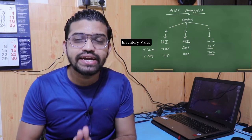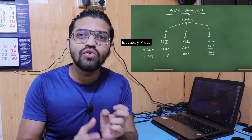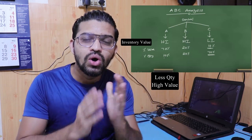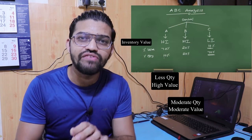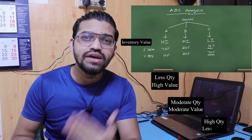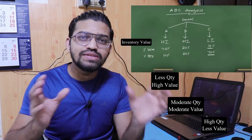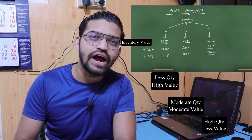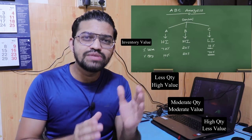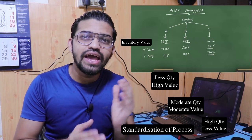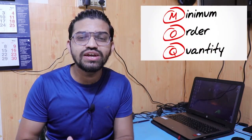All inventory items are categorized in terms of value and quantity. Class A: lesser quantity, higher value. Class B: moderate quantity, moderate value. Class C: higher quantity, lesser value. This categorization is carried out to achieve better control over inventory items. By carrying out ABC analysis, the whole process gets standardized in every manufacturing industry, and the minimum order quantity can be decided for each class.